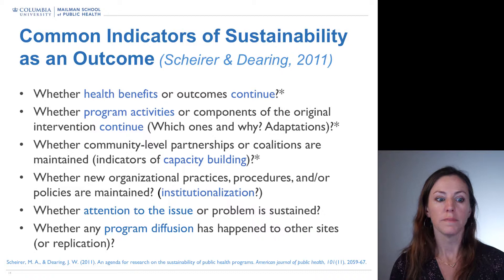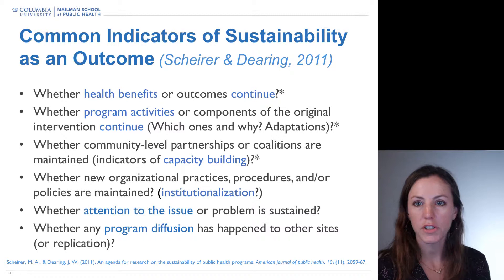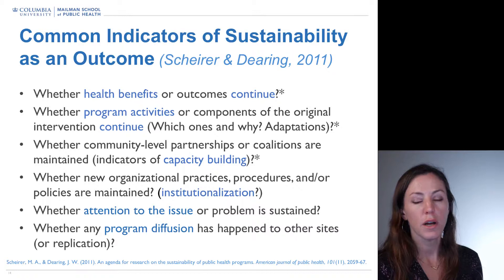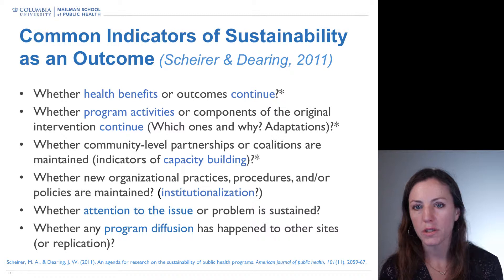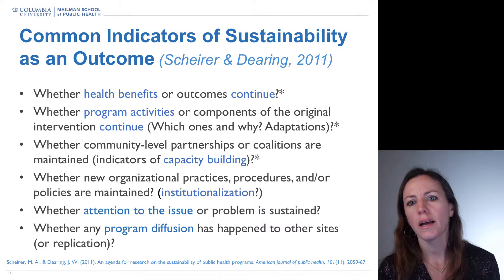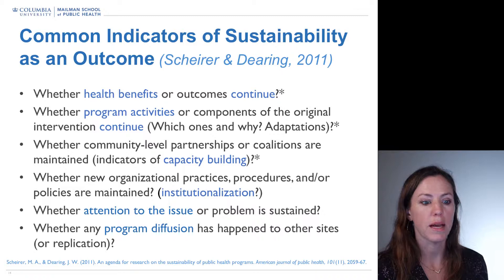Are the core components of the original intervention continued? So if the intervention has six core components, are all core components continuing to be delivered? If not, which ones are continued, which ones are not, and why? What adaptations were made? This is really critical information that often is not captured, but can really help inform practice and our evolving evidence base around sustainability and adaptation.